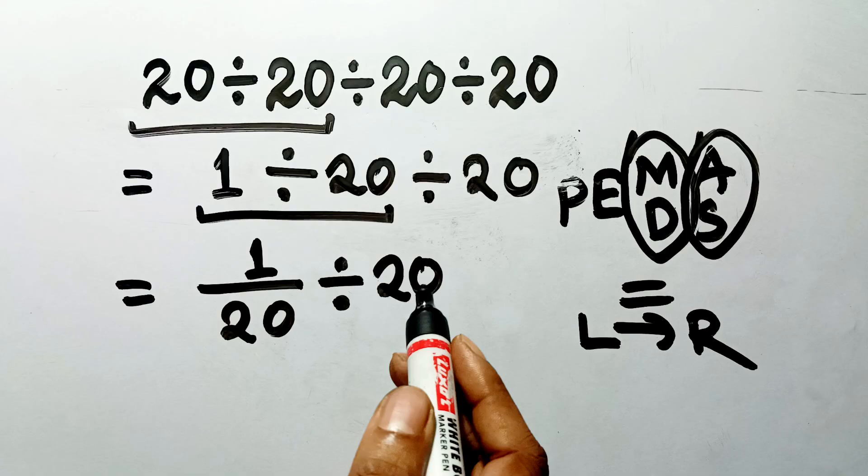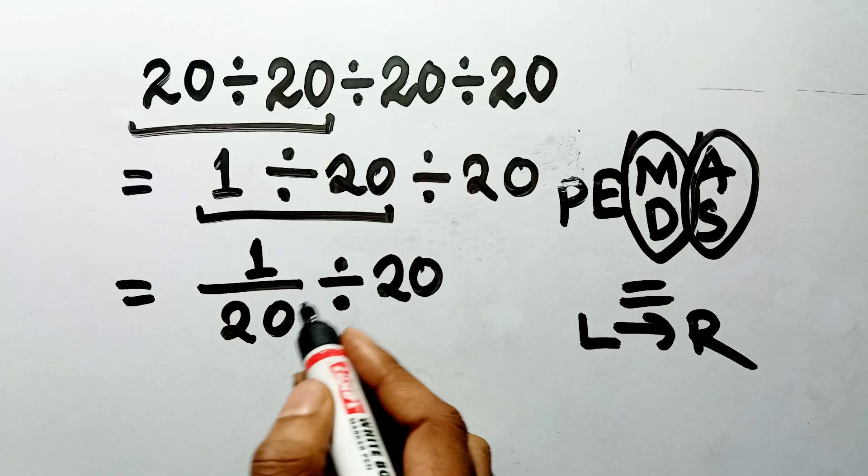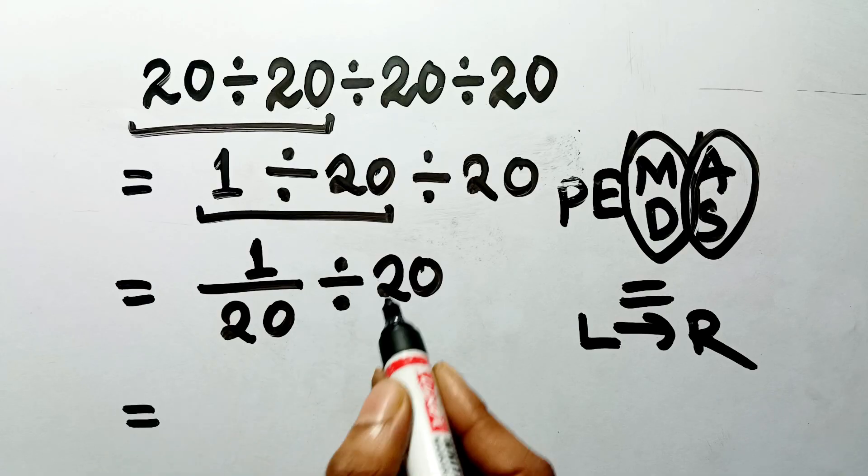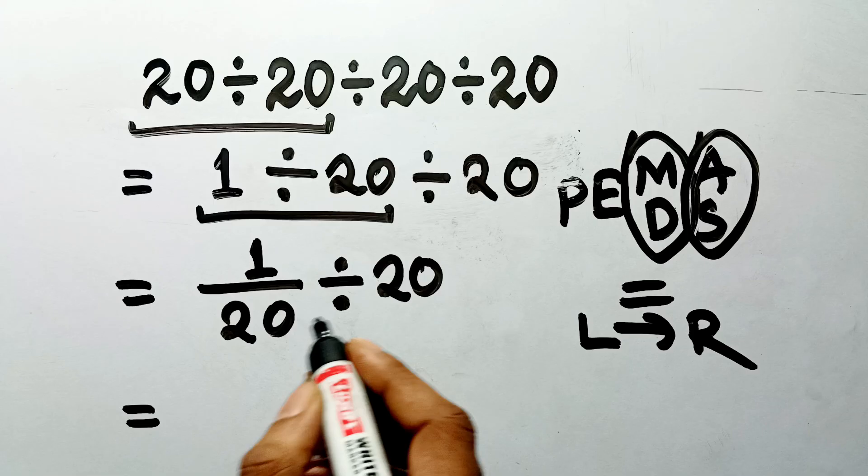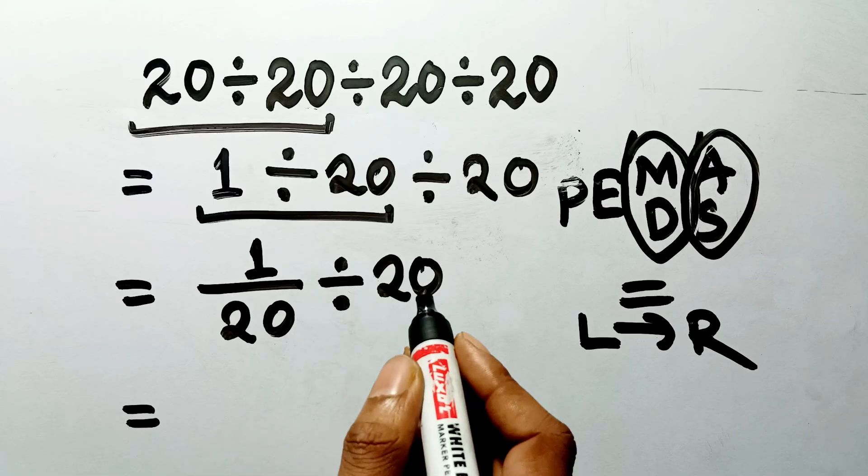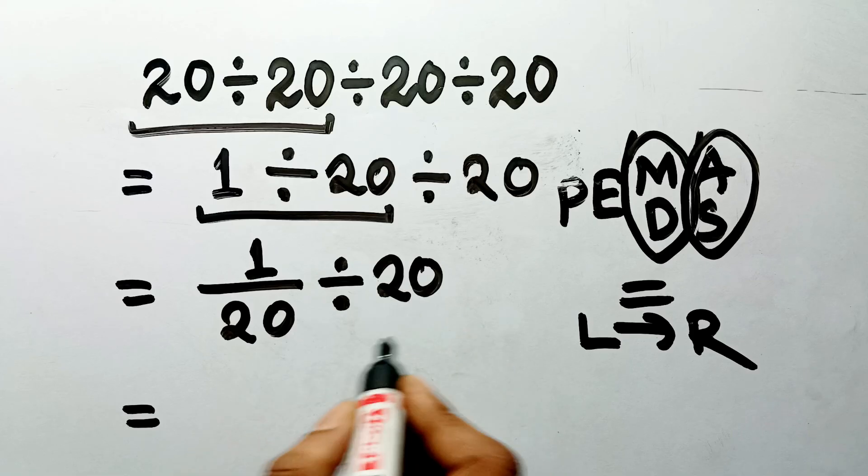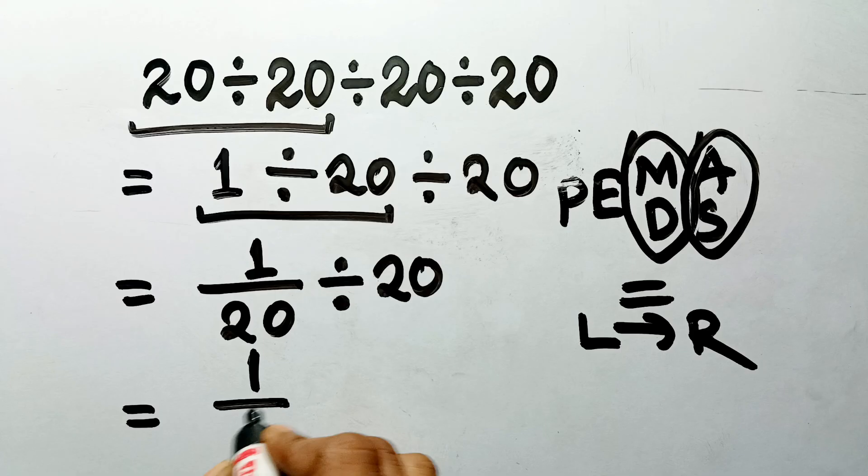To divide a fraction by a number, we can change the division to multiplication and use the reciprocal. Dividing by 20 is the same as multiplying by 1 over 20. So, we have 1 twentieth times 1 twentieth.